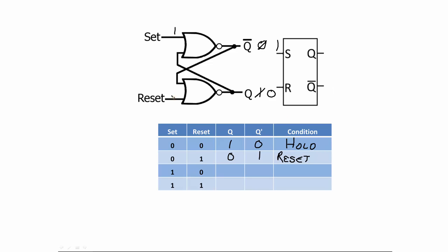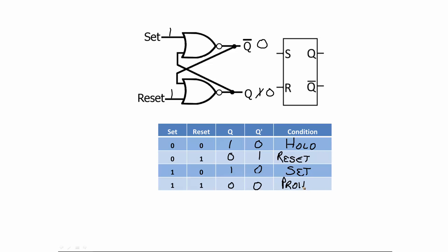For the NOR latch with set=1, reset=0: putting a one in causes zero to come out; the zero feeds back giving a one at the output. Q goes high and Q-not goes low — this is the set condition. The last condition, with both inputs high, causes both outputs to go to zero — a non-complementary, prohibited condition. The NOR latch truth table is indeed the opposite of the NAND latch.